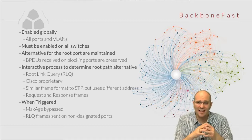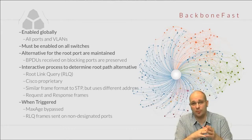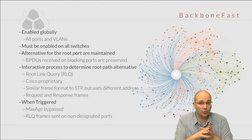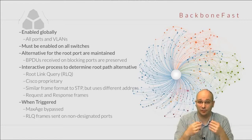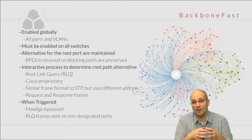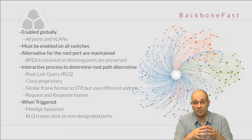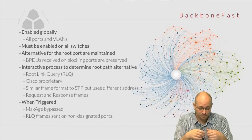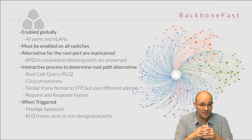In order to determine that, the switch needs to interactively figure that out. It is going to do that using another Cisco proprietary protocol called the Root Link Query. The Root Link Query is a protocol that looks very similar to spanning tree at the frame level — the format is just about the same. However, the address to which it is sent is not that of spanning tree. In a case where some switches don't understand the Root Link Queries, they are simply going to ignore them, and the switch that generated the queries is going to have to go through the standard spanning tree convergence instead of the slightly faster one using Backbone Fast.